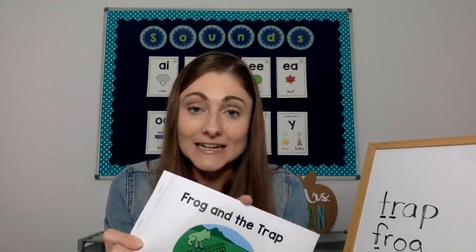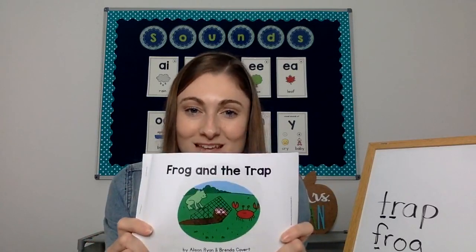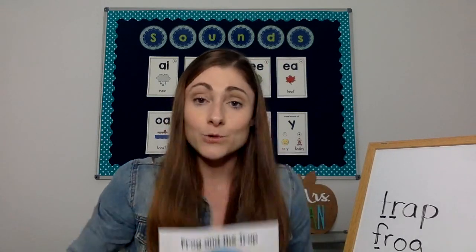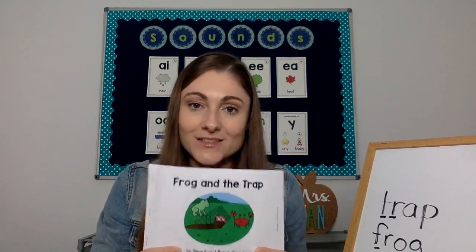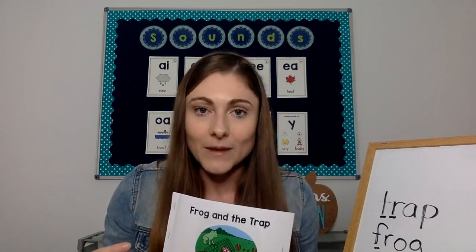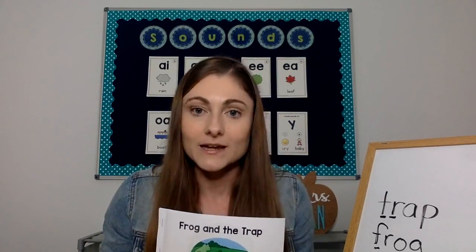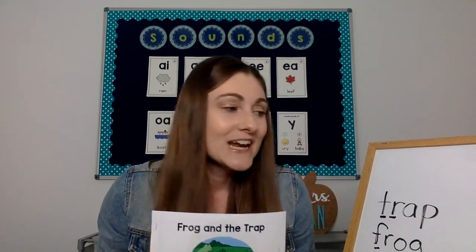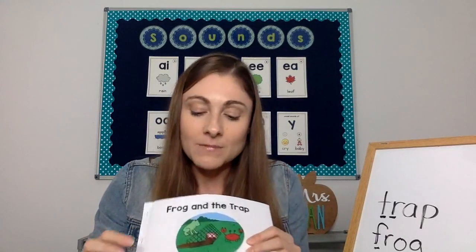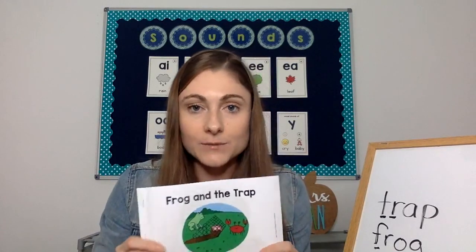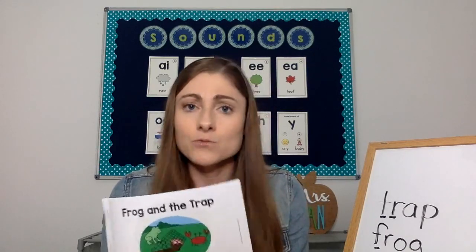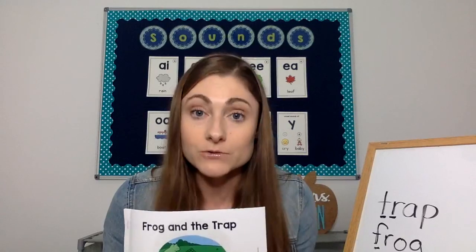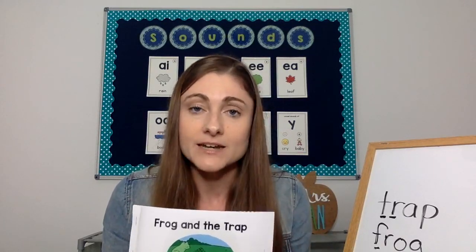I write a second word — for example, 'frog' — and ask which letter is blended with the R here. They blend and read it. The reason I chose 'trap' and 'frog' is because today's story is called 'Frog and the Trap,' from my decodable text bundles on TPT. Then I show them the cover and ask what they see.